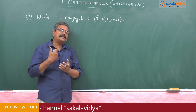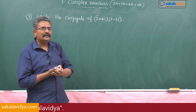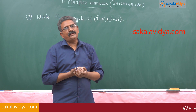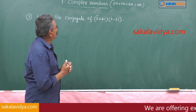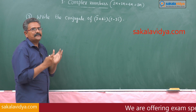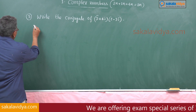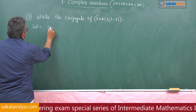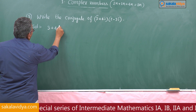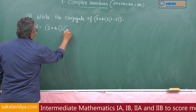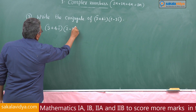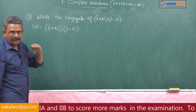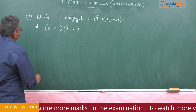What will be the conjugate of a + bi? That is a - bi. We can adopt any one of the methods. So first, let us use the first method and multiply: (3 + 4i) into (2 - 3i), putting it in the form a + bi.